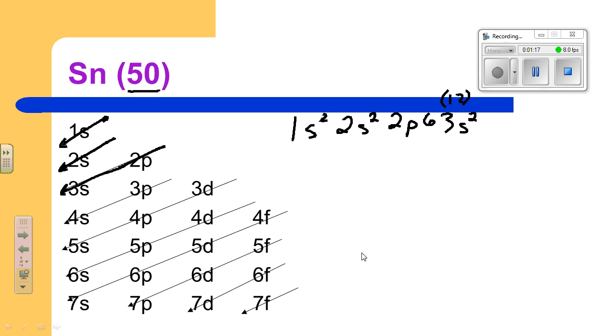So then after 3s, we go to the end of the next one, which takes us through 3p. And again, 6 of them for 3p. And then here we have one of those overlaps. So 4s comes next after that. 4s, 2.